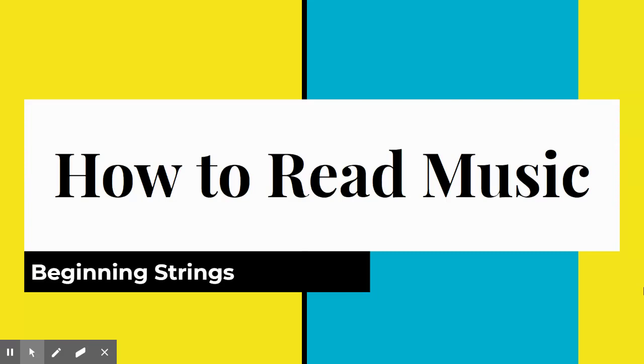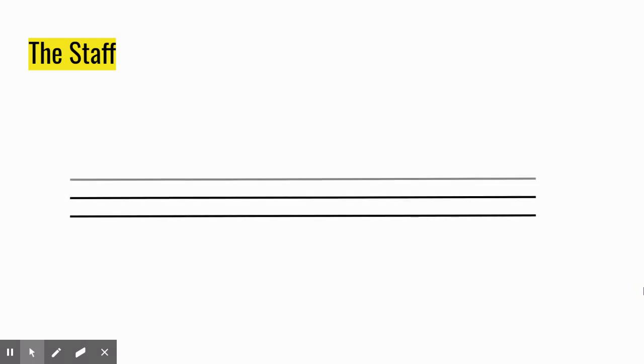In this video, we'll go over the basics of reading notes in music. Music notes are written on a musical staff. The staff is made up of five lines and the four spaces between those lines.